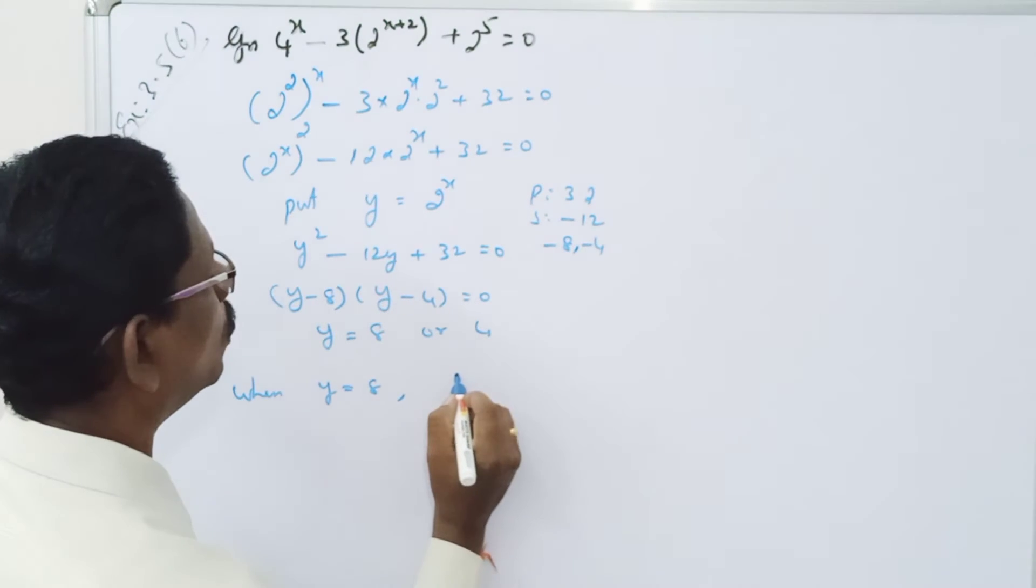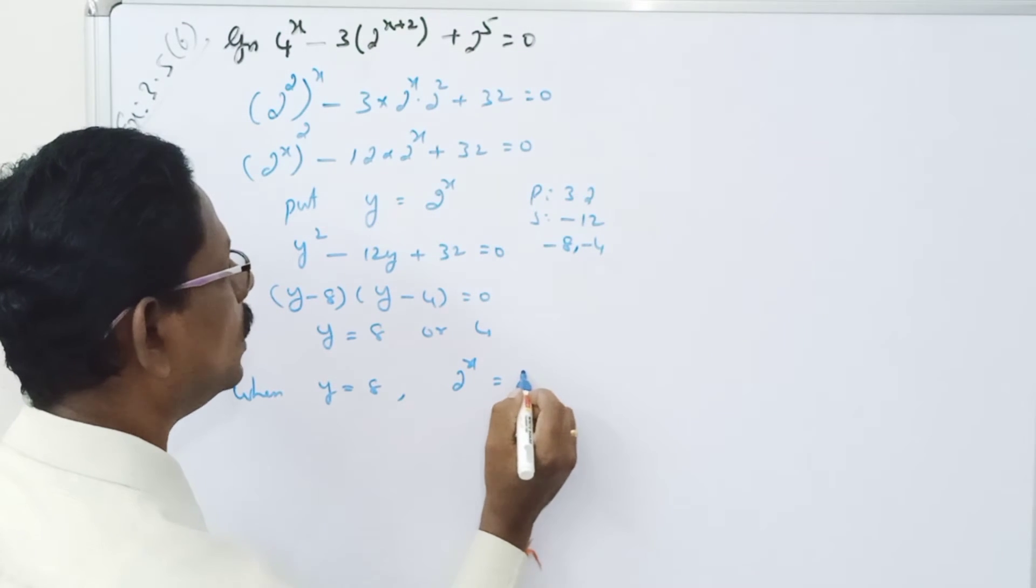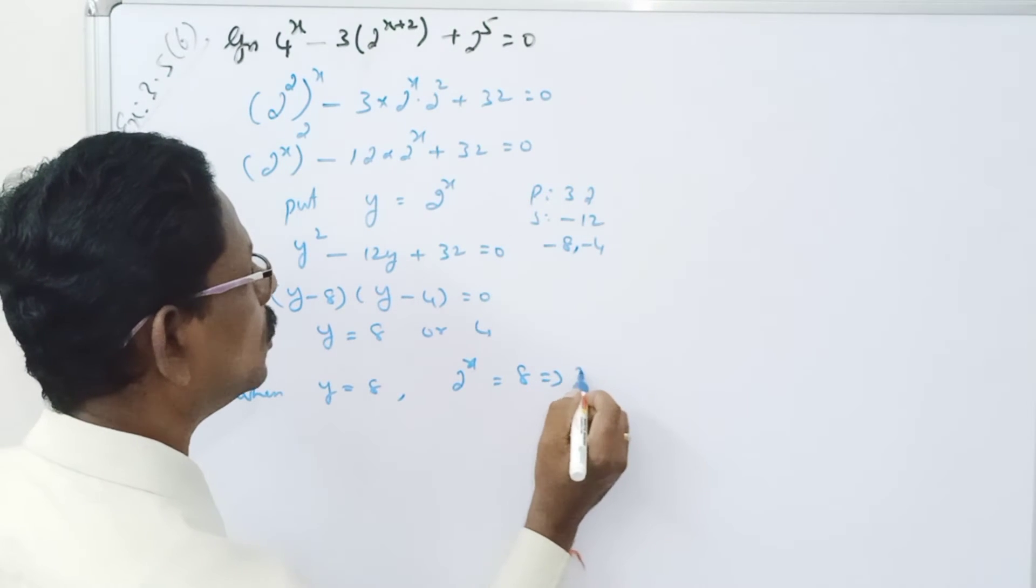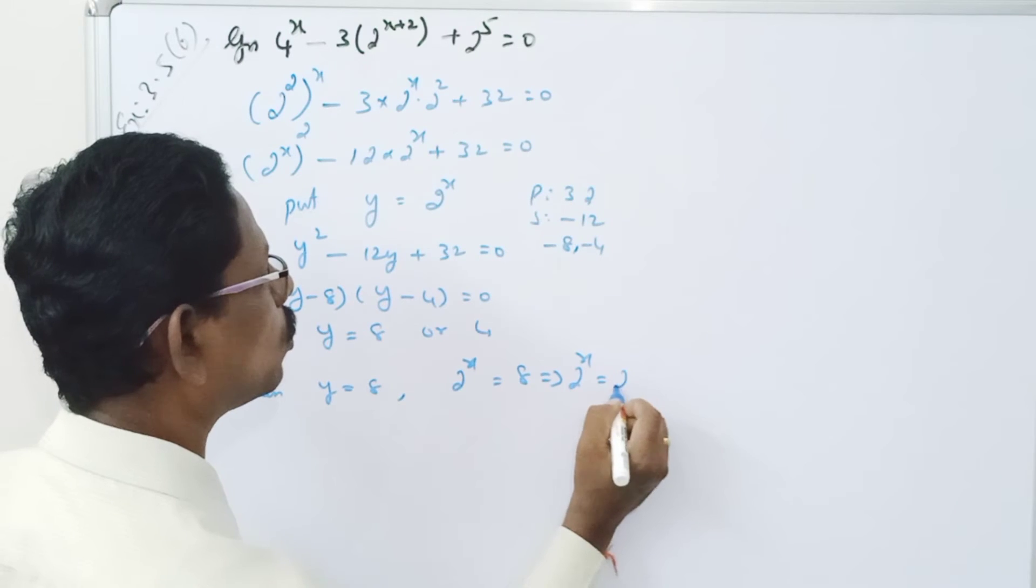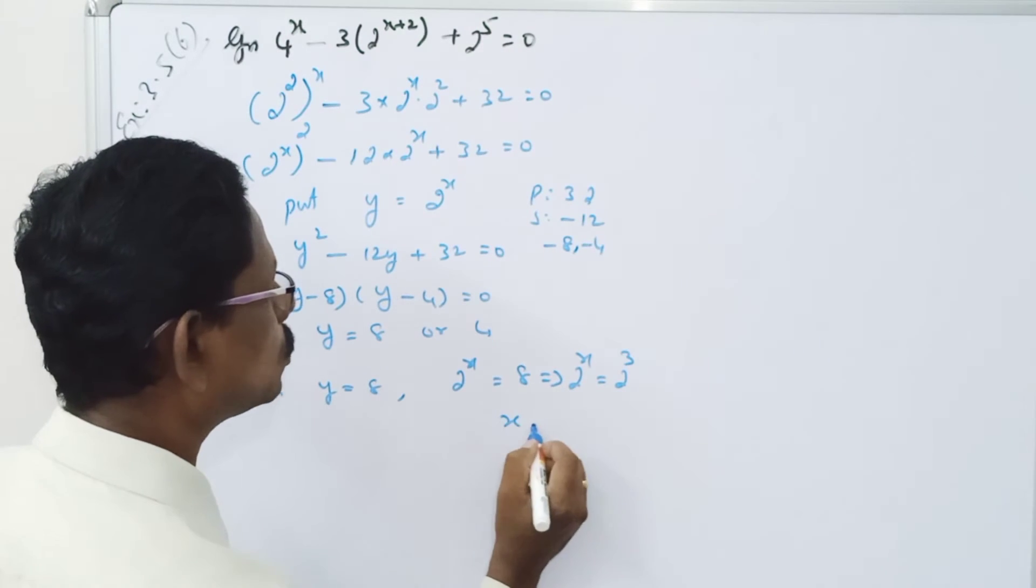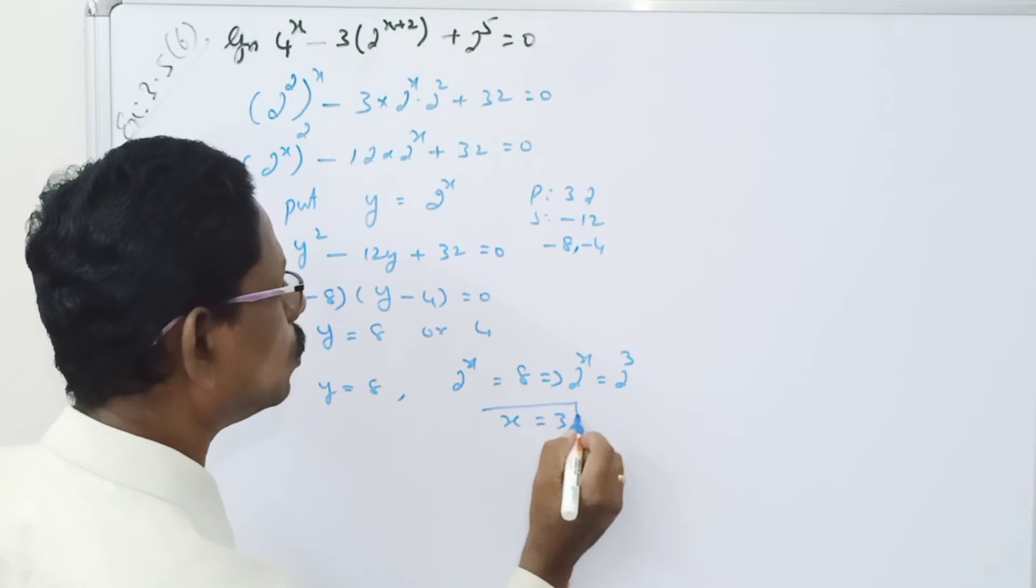what we have? 2 to the power x equals 8. This implies 2 to the power x equals 2 cubed. So x equals 3.